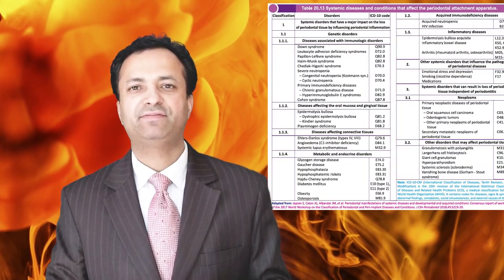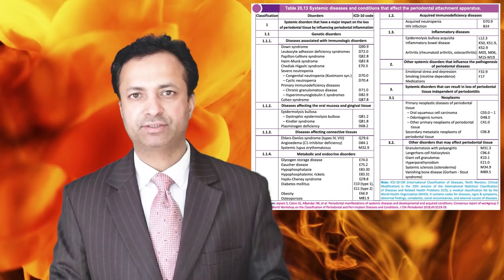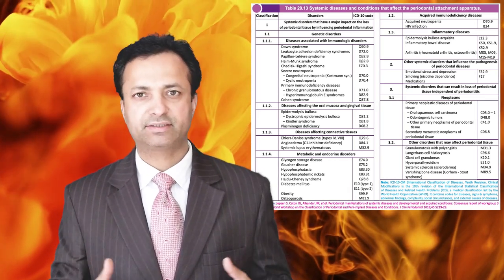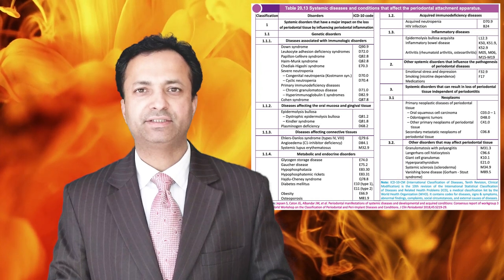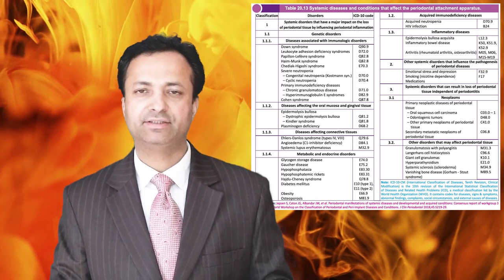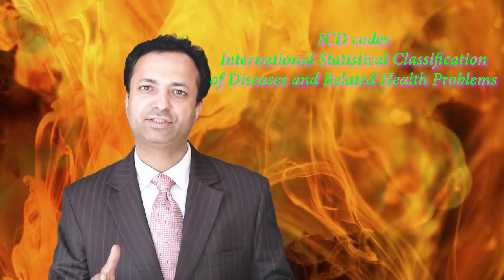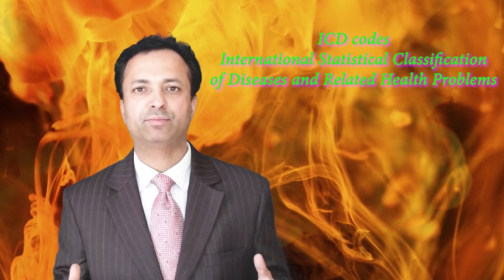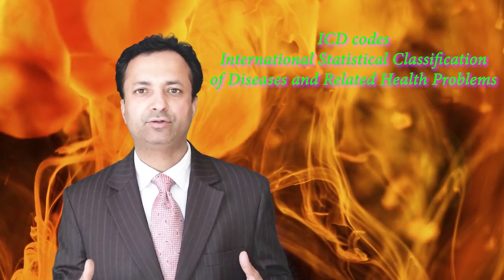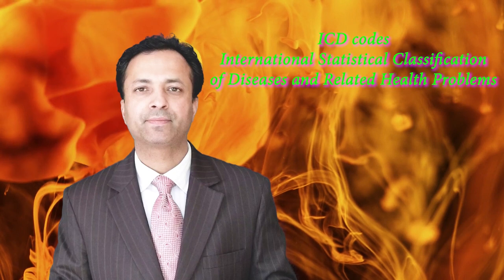Coming to periodontitis as a manifestation of systemic diseases, there are certain systemic diseases — such as Papillon-Lefèvre syndrome or Haim-Munk syndrome — which have periodontitis as their earliest manifestation. These diseases have been classified in this category. As per the classification system, ICD codes (International Classification of Diseases and Related Health Problems codes) should be applied to identify these diseases.